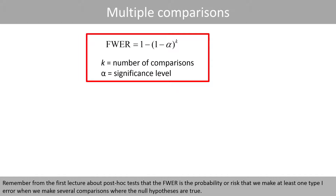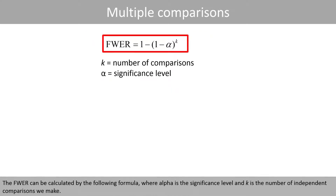Remember from the first lecture about post-hoc tests that the family-wise error rate is the probability or risk that we make at least one type 1 error when we make several comparisons where the null hypotheses are true. The family-wise error rate can be calculated by the following formula, where alpha is the significance level and k is the number of independent comparisons we make.